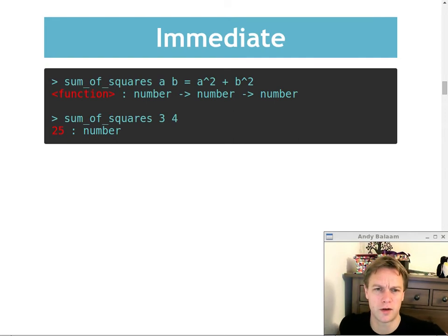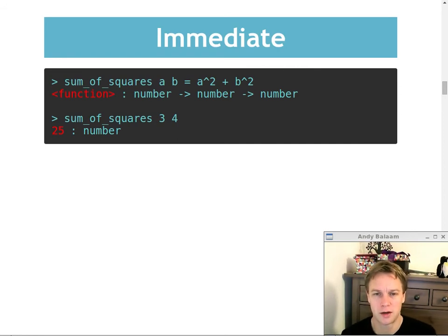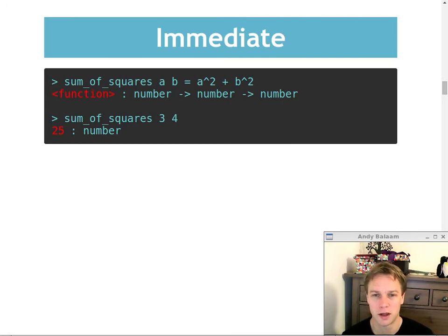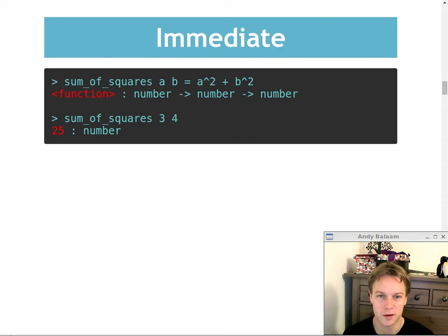You can define a function which takes in two arguments. Here, this function sum of squares takes in two arguments, a and b, and on the right-hand side is the definition: a squared plus b squared. You can use the caret symbol there to do squared. It's figured out that the type of this function takes in two numbers and returns a number. The reason why it's written like that - where the return value just looks like another thing in the list - we'll get to in later videos, but it makes for some pretty cool stuff. This is how you call the function sum of squares with two arguments: you just say sum of squares, 3 space 4. That gives you back the answer, 25.